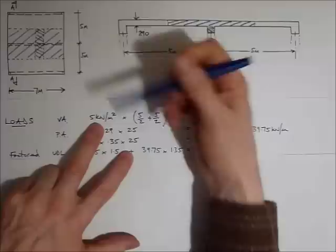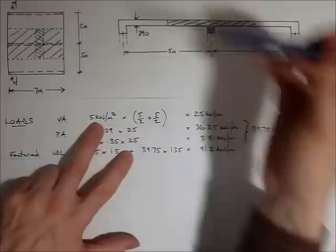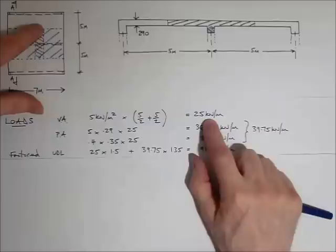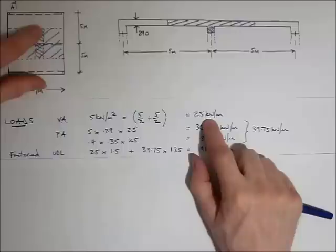So the live load, we have a variable action of 5kN/m² acting over a load width of 5m, which is made up of 5 over 2 plus 5 over 2. And if we consider just a 1m length of slab, a 1m length of beam, then the variable action amounts to 25kN/m per metre, which is 5kN/m² times a 5m load width.